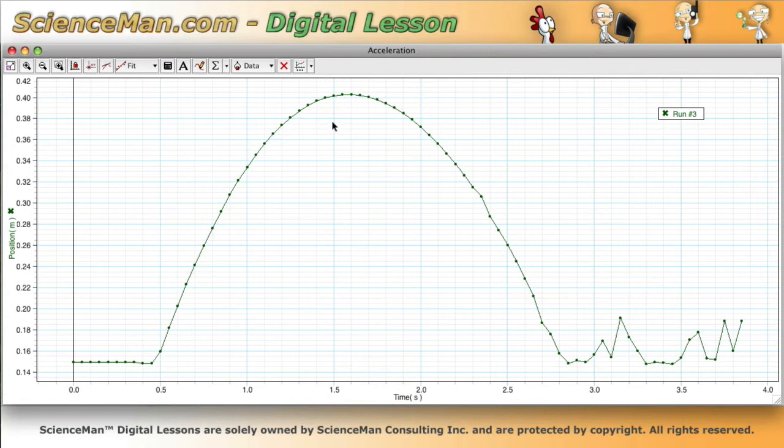Now some people will call that deceleration and that's not exactly incorrect, but it's probably better to call it negative acceleration. In other words, a curve downward on a position time graph is negative acceleration.